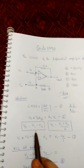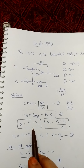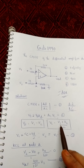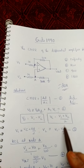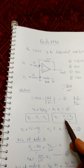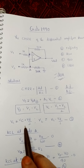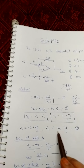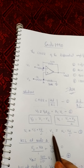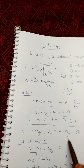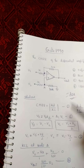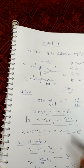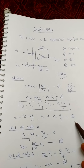The differential voltage Vd is equal to V1 minus V2. The common mode voltage Vc is equal to (V1 + V2) / 2. From these equations we can write: V1 = Vc + Vd/2, and V2 = Vc − Vd/2. In the given problem, V1 and V2 are given, so we use these expressions.